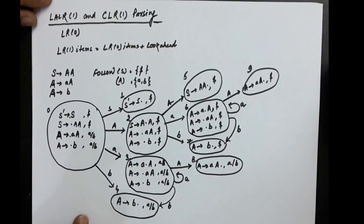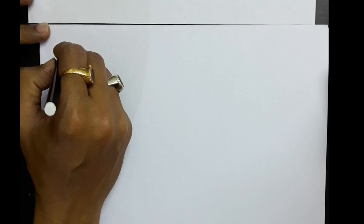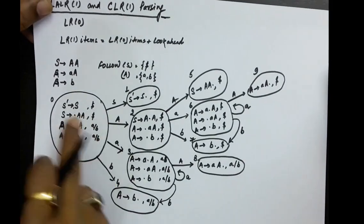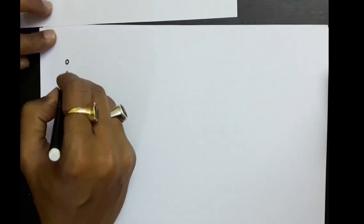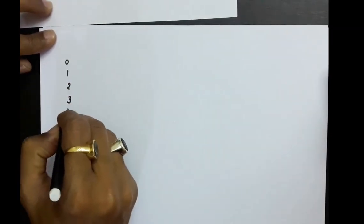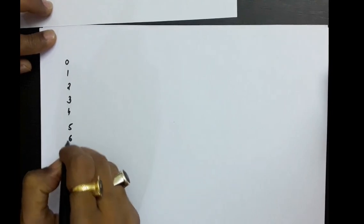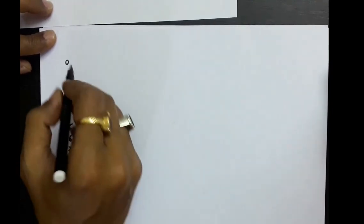Now, you will have to make the state table, transition table for this. So, let us make a passing table, not the transition table, but the passing table. For this passing table, we have the states. The number of states here are 0, 1, 2, 3, 4, 5, 6, 7, 8, and 9. So, we are making the states 0 through 9.